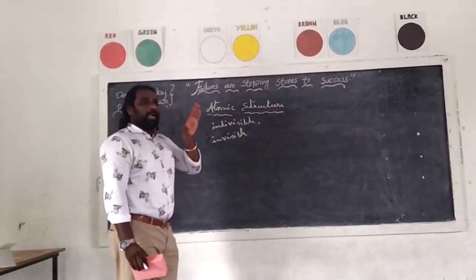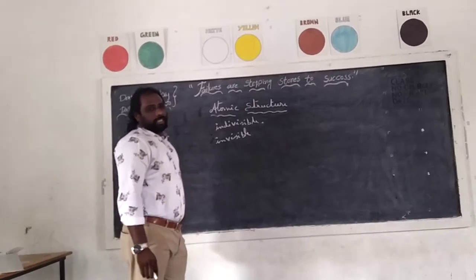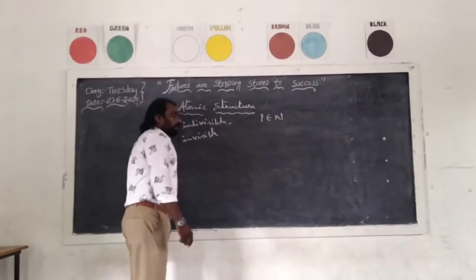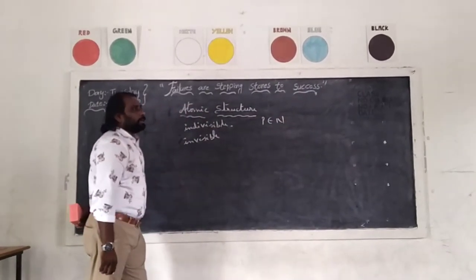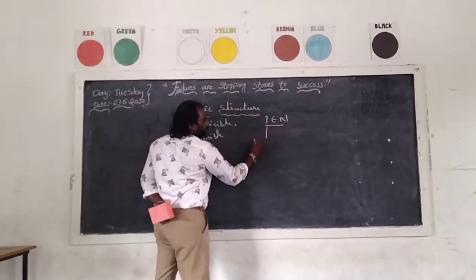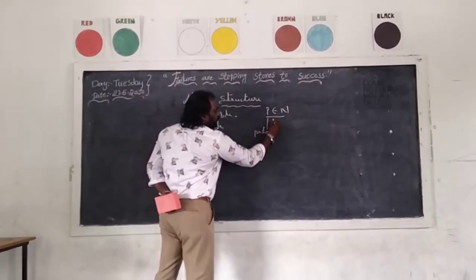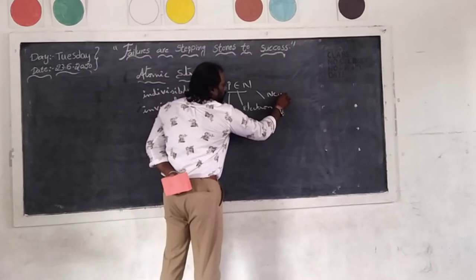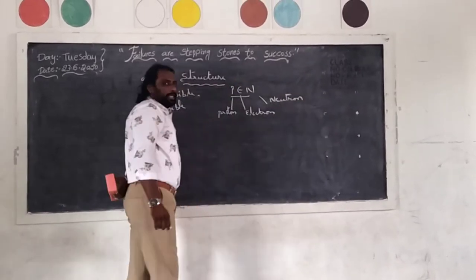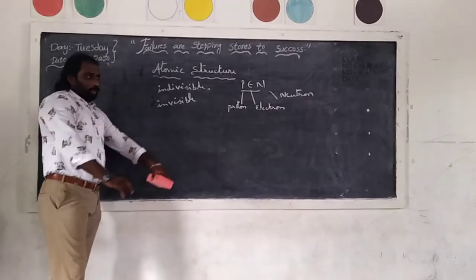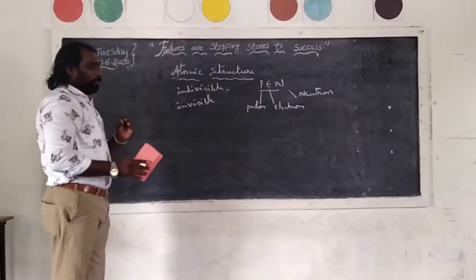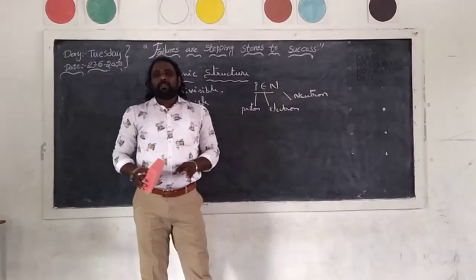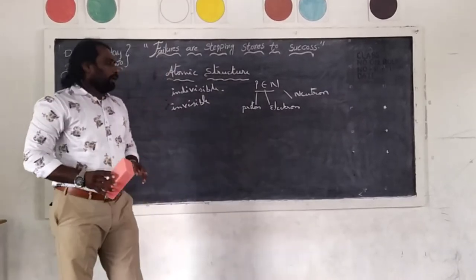So, atom only has small particles. In that atom also, other subatomic particles are there. For this subatomic particles, I will give you a formula: PEN. P for proton, E for electron, N for neutron. These are the subatomic particles in an atom. For one more time, very important: proton, electron, and neutron. These three are the subatomic particles of the atom.